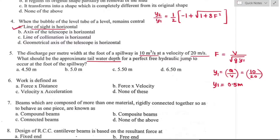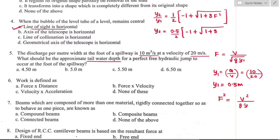Substituting y₁ = 0.5 m, and Froude number squared = V²/(g·y₁) = 20²/(9.81 × 0.5), the tailwater depth calculates to 6.14 m. The nearest answer is option D, 6.50 m.